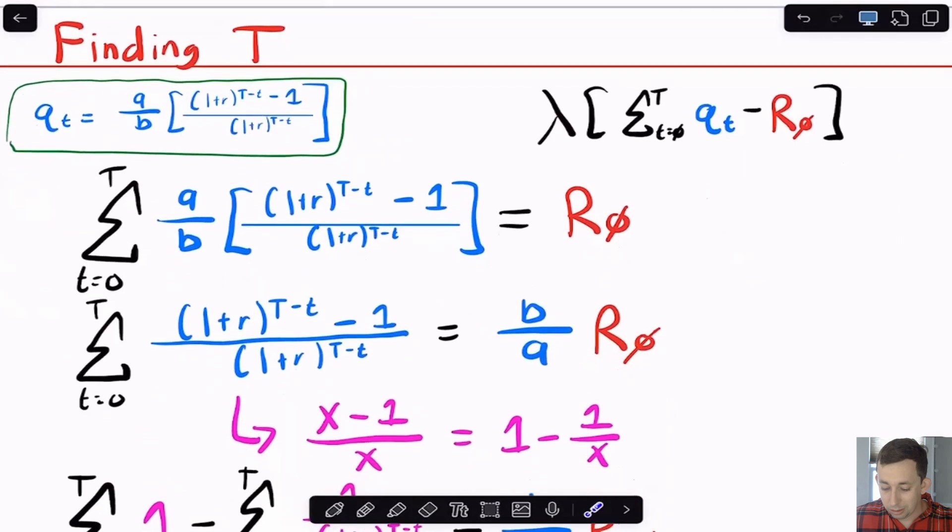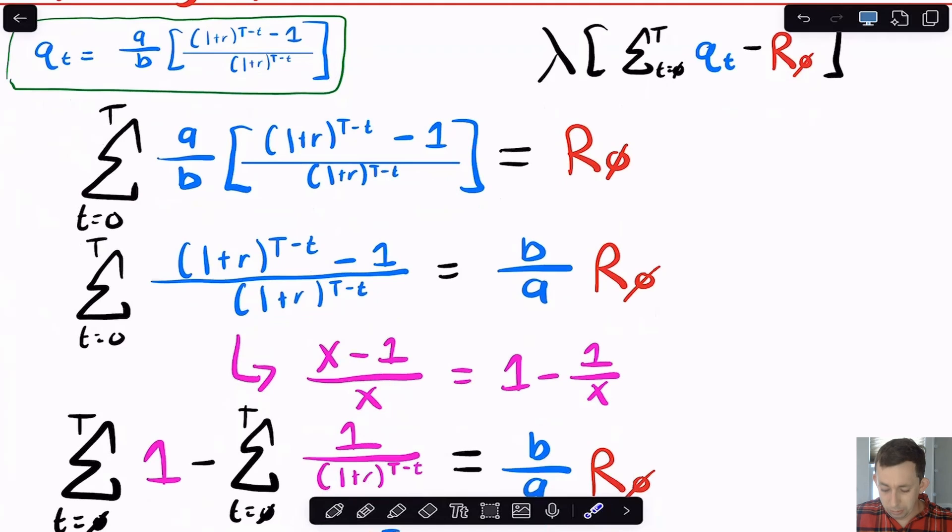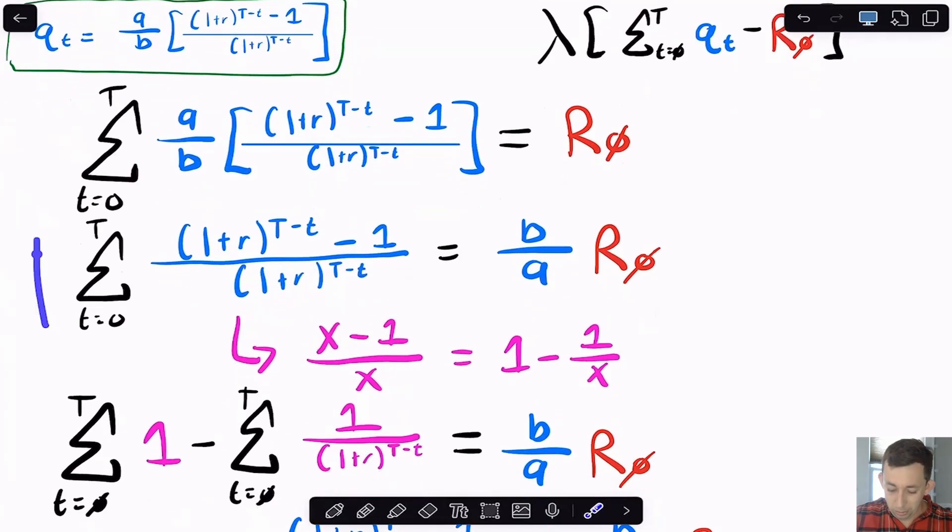One thing I also know is I know that in my constraint, that for our maximization problem, we had that the sum of the extraction has got to be equal to the amount that there was in the ground. So I'm just going to use that constraint right here. I know what QT is. QT is this box in green right here. So I'm going to plug that in, and I'm going to work through some math. And as I work through the math, I get to this point right here, where I've got to figure out what I'm going to do.